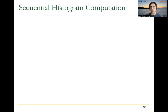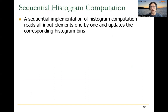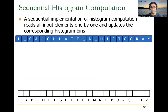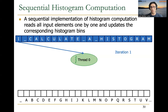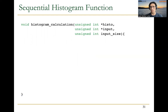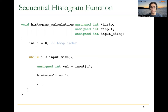The sequential histogram computation is pretty simple. We just need to go one by one over the elements of the input and update the corresponding histogram bins. For example, if this is our input and this is the histogram, a single thread will go iteration by iteration, reading one element of the input and incrementing the corresponding counter. The code for the sequential histogram computation uses a while loop — it could also be a for loop — to go over all the elements of the input. The thread reads each input value and then increments the corresponding bin of the histogram.